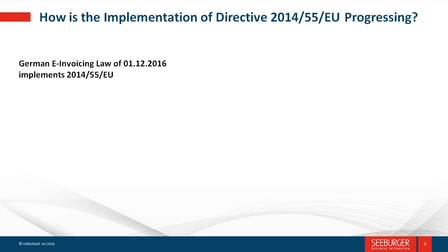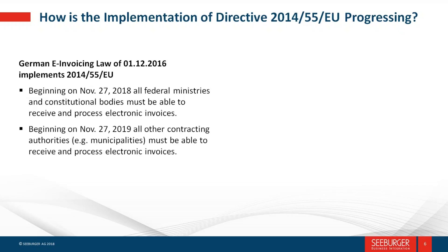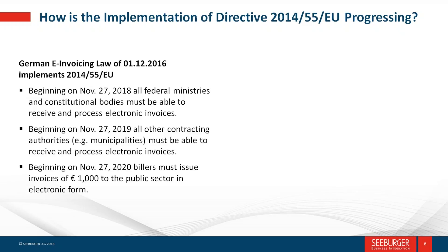Speaking directly from the German perspective, their progression has been: in November of this year, all federal ministries and constitutional bodies must be able to receive and process electronic invoices. The following year, all contracting authorities must be able to receive and process electronic invoices. The third step is that anyone doing business in the public sector issuing invoices over €1,000 must be in electronic form. This is one example of how the laws are becoming increasingly a rollout of electronic invoice requirements.